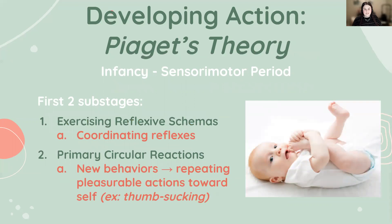Going back to Piaget — his first stage in his theory is the sensorimotor period, which occurs during infancy. During this period, babies and toddlers coordinate their senses and motor abilities to gain knowledge about the world. There are six sub-stages, and the first two fall within the early infancy period we're talking about today.